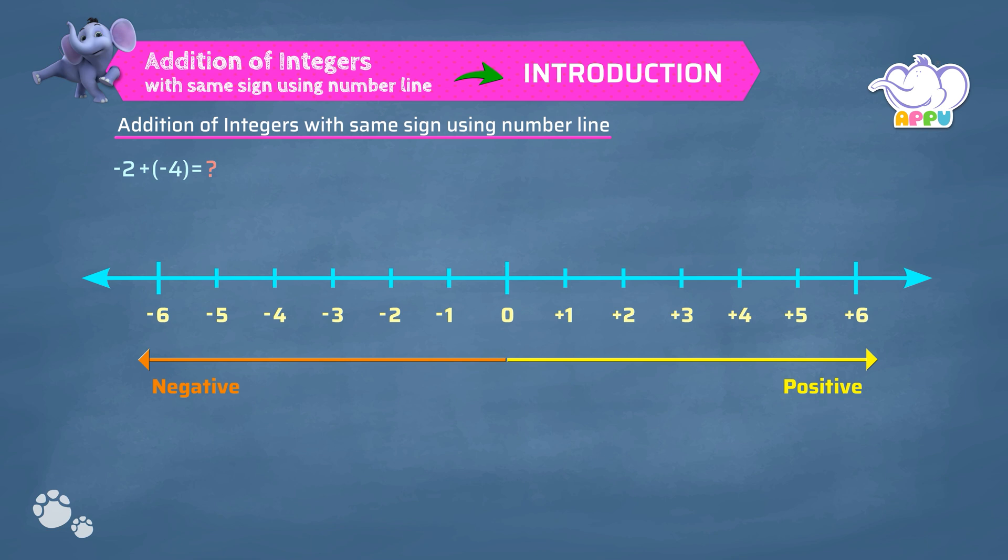Here is the number line. With reference to 0, we move 2 to the left to get minus 2. Then move 4 to the left from minus 2. We reach minus 6. So the answer is minus 6.